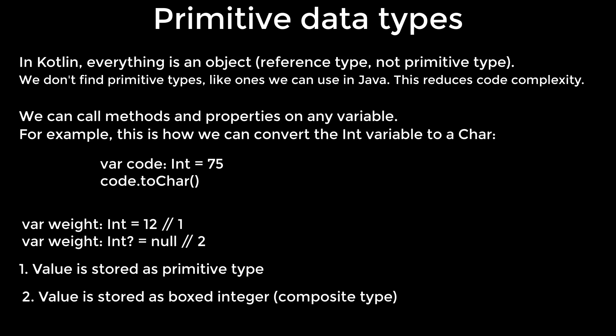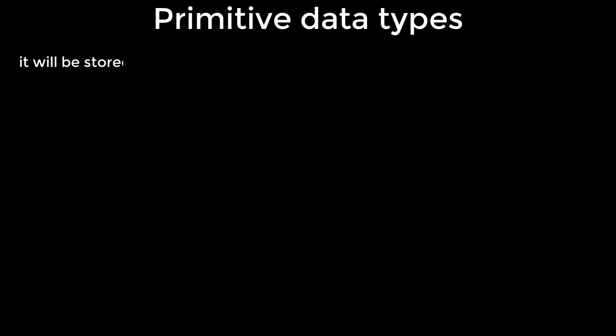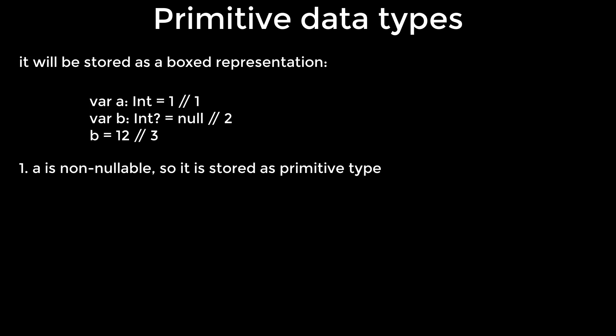One value is stored as primitive type, two value is stored as boxed integer composite type. This means that each time we create a number (byte, short, int, long, double, float) or char, boolean, it will be stored as a primitive type unless we declare it as a nullable type, char array, and so on. Otherwise it will be stored as a boxed representation. One is non-nullable so it is stored as primitive type. Two, b is null so it is stored as boxed representation.